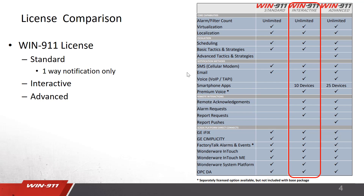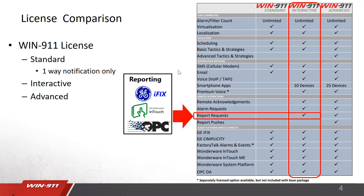Moving on to interactive — using this license, you can have access to all notification types, including SMS, email, voice, and the smartphone app. You can have up to 10 devices for the smartphone app. On the interactive license, you can also remotely acknowledge the alarms, and you can do alarm requests. For example, you could say, give me all alarms in a certain strategy, and it'll come back and tell you the status of those alarms. We also support report requests, which are only available on these three SCADAs: iFix, InTouch, or using OPC to connect. In a report, you can define key items you want — they're predefined items — and it'll give you the status of those items.